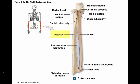The radius is the lateral bone of the forearm. At the proximal end is the radial head, which articulates with the humerus. A narrow neck extends from the radial head to the radial tuberosity, where the biceps brachii muscle attaches. The shaft of the radius curves along its length. At the distal end, the shaft enlarges and is much larger than the distal end of the ulna. The styloid process of the radius is found on the lateral surface and helps to stabilize the joint.